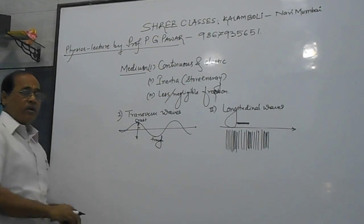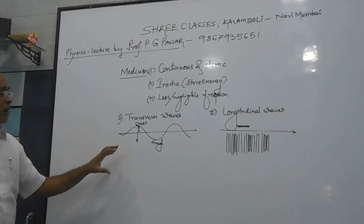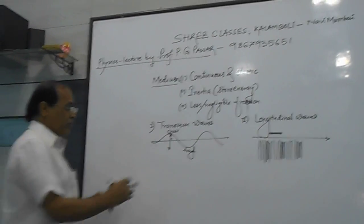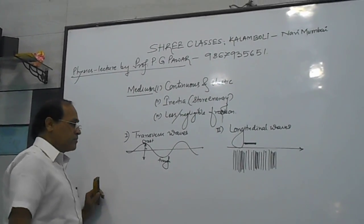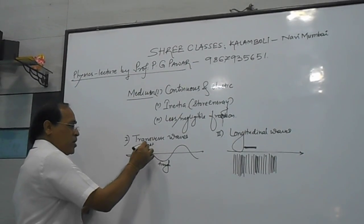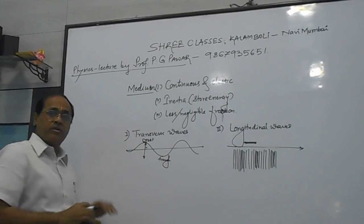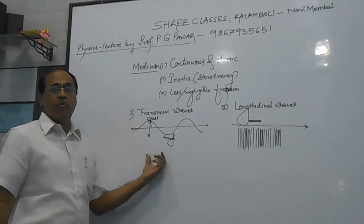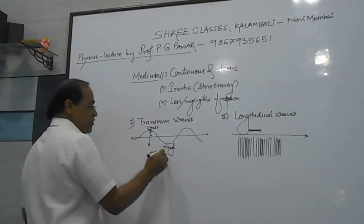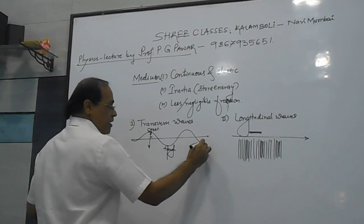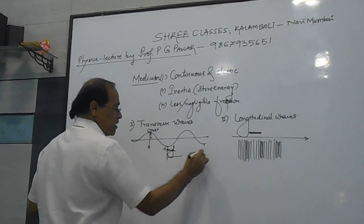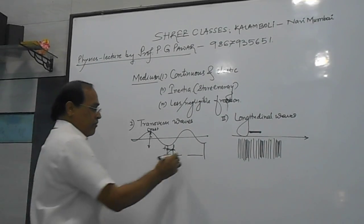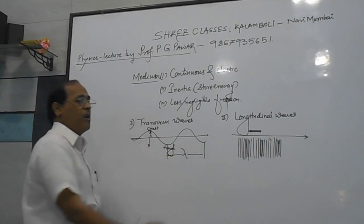Each and every particle, and subsequent particles, are in different phases of motion. When the wave travels, the distance between two points of the same phase is called the wavelength. For example, from one trough to the next trough, that distance is called the wavelength, and it is denoted by lambda (λ).